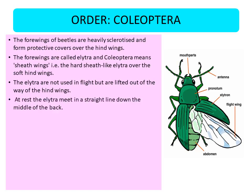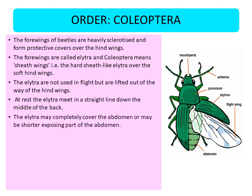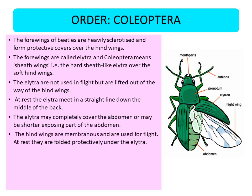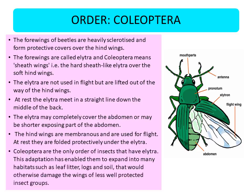The elytra are not used in flight but are lifted out of the way to expose the hind wings. At rest, the elytra meet in a straight line down the middle of the back. The elytra may completely cover the abdomen or may be slightly shorter, exposing part of the abdomen. The hind wings are membranous and used for flight; at rest they are folded protectively under the elytra. Coleoptera is the only order of insects that has elytra, and these adaptations have enabled them to expand into many habitats such as leaf litter, logs, and soil that would otherwise damage the wings of less well-protected insect groups.